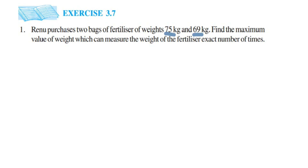What we have to find out is the maximum value of weight that can measure the weight of the fertilizer an exact number of times. This means we want to find the maximum number which can divide 75 and 69 an exact number of times — that is, completely divisible, exactly, without any remainder.